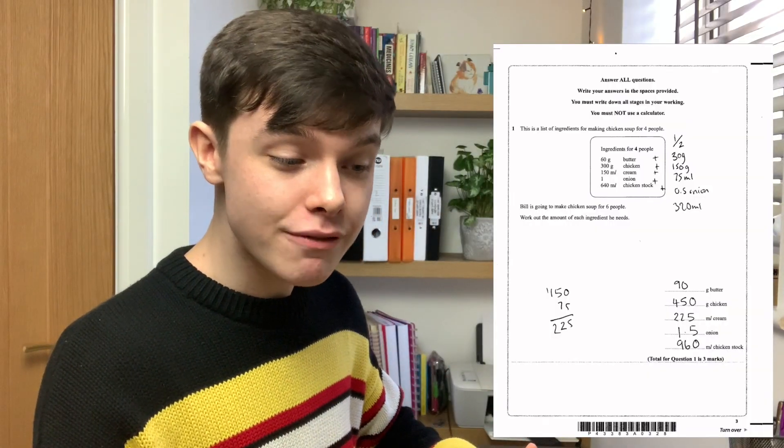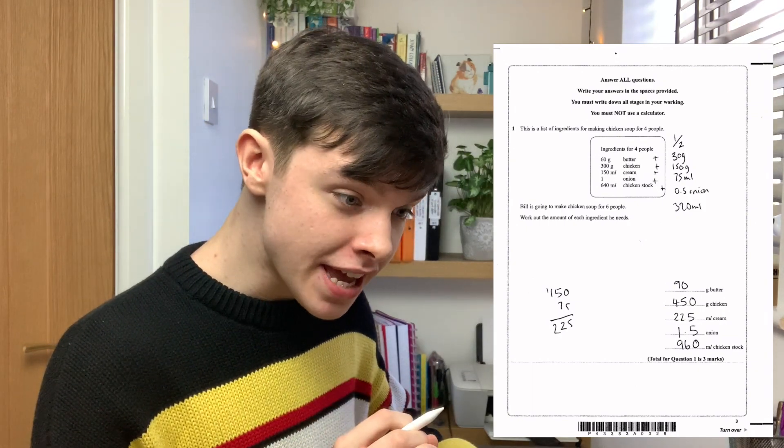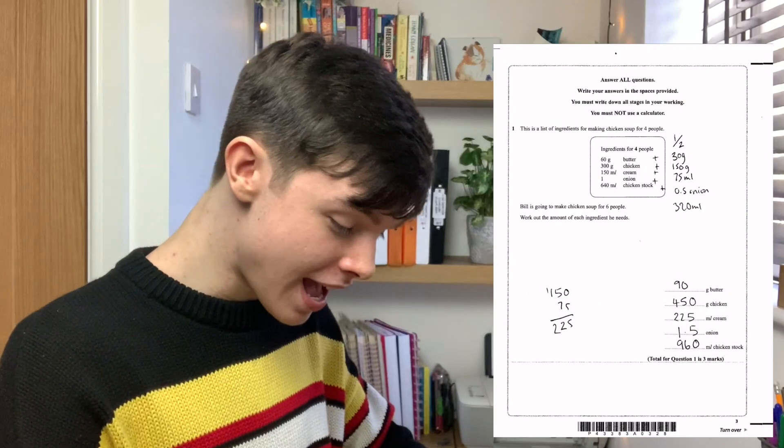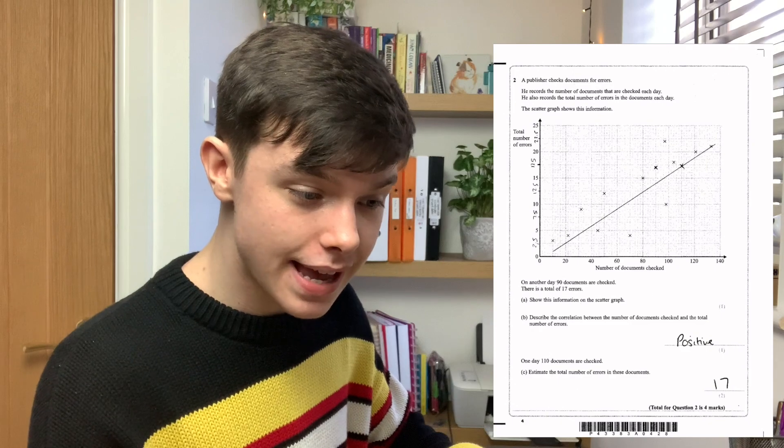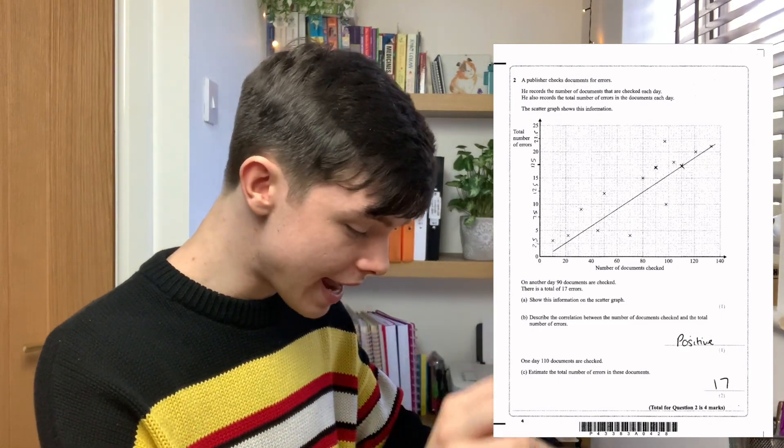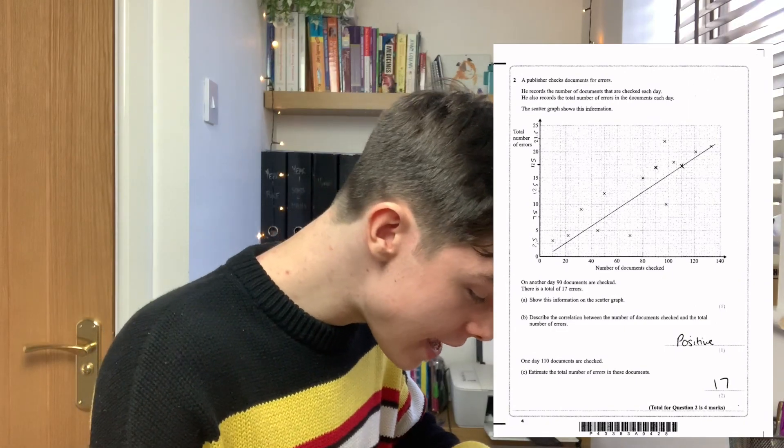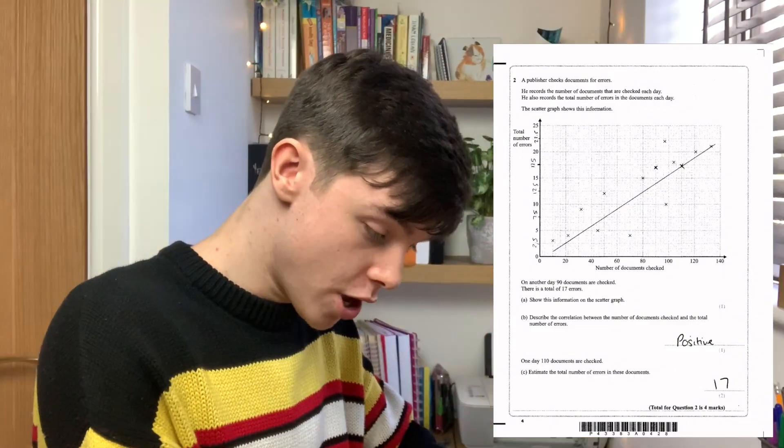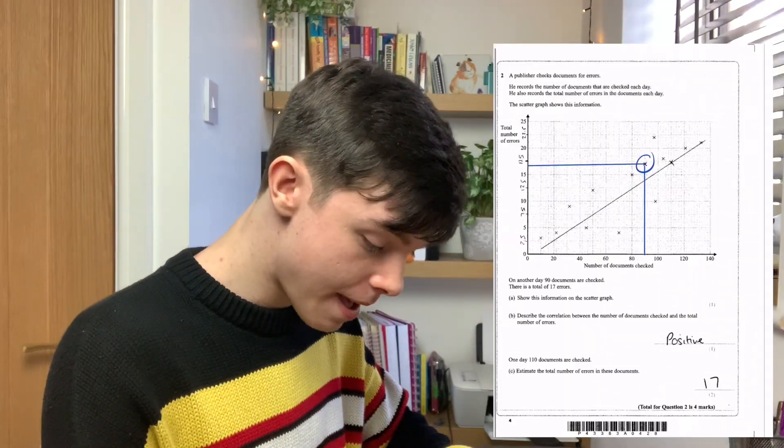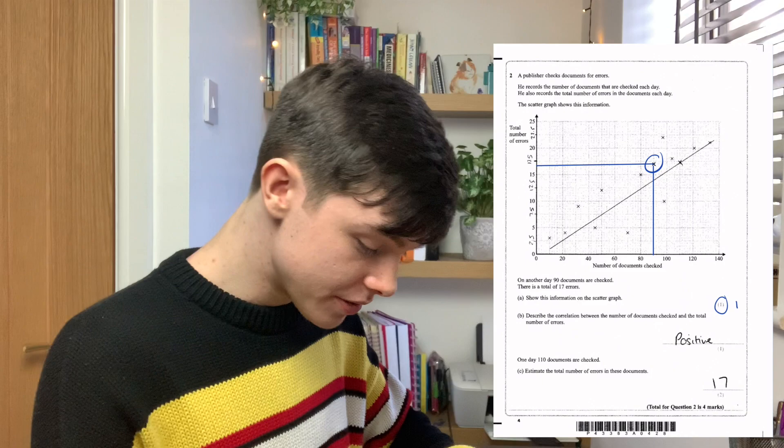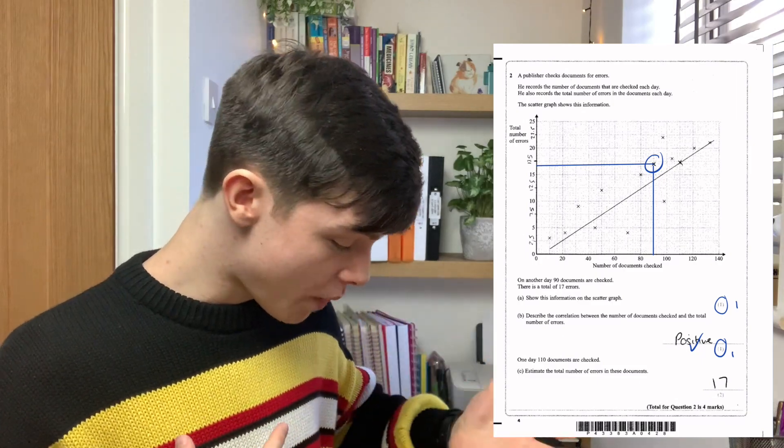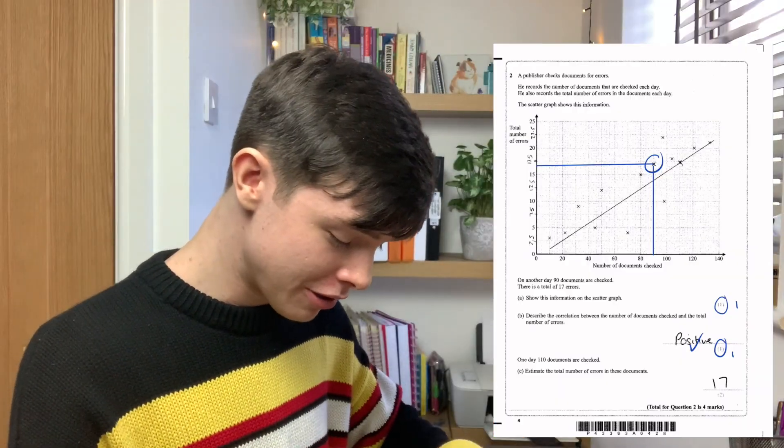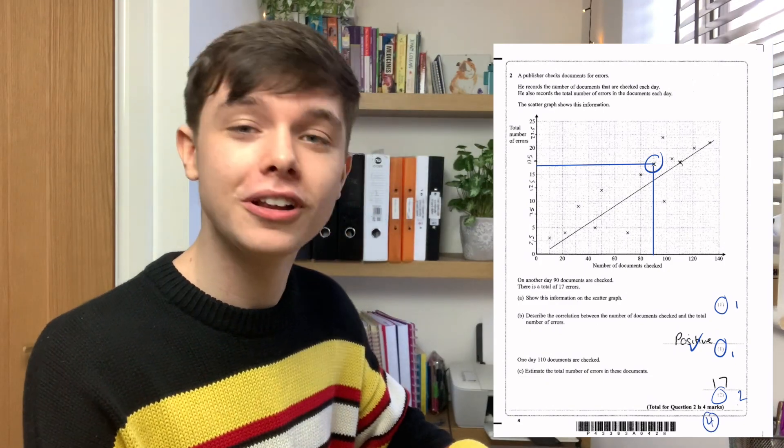The first question was a recipes question and I think Rosie has got them all right. She has. And it's three marks. Question one, full marks. The next question is a scatter graph question. There's 90 and there is 17. Perfect. There is one mark. Part B is positive. There is another mark. And then part C, Rosie put 17, another two marks. So, that question has a total of four marks.